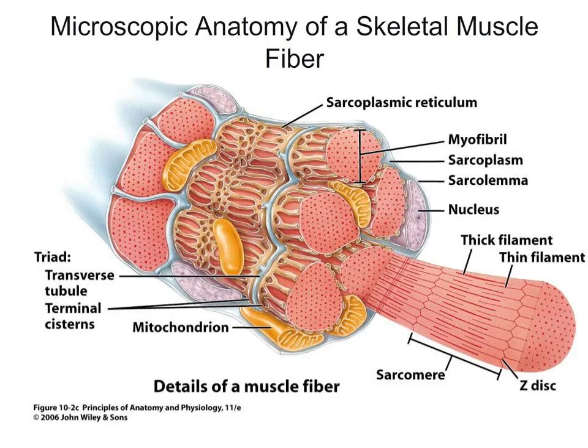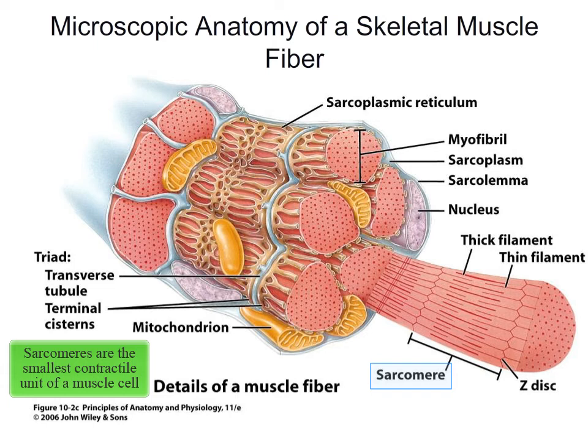Now we're going to take a closer look at the components of a skeletal muscle fiber — the same thing as a skeletal muscle cell. The majority of the inside diameter is filled with myofibrils, which are the contractile organelles found within a skeletal muscle cell. Each myofibril is divided up into repeating units called sarcomeres. Sarcomeres are the smallest contractile unit of a skeletal muscle. When the sarcomeres contract, the myofibrils contract, and eventually the whole muscle cell and the whole muscle will contract.